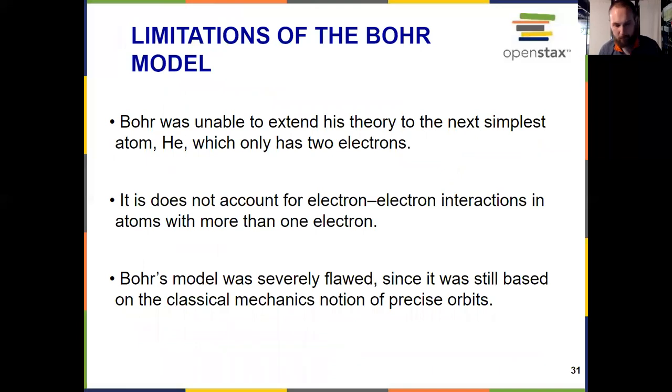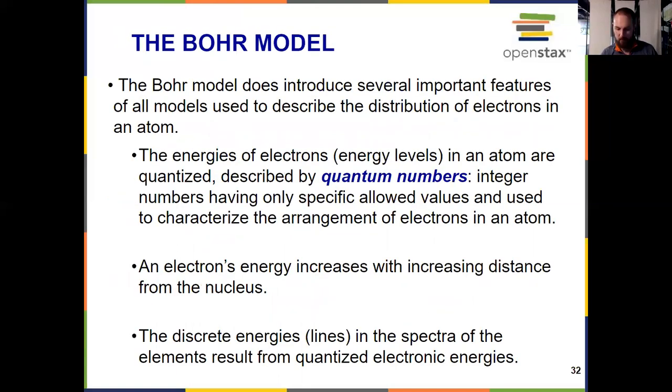To wrap up the Bohr model, it was a giant leap forward in the world of chemistry and physics, but when we tried to go from the simplest atom, hydrogen, to just one more electron and proton, helium, the Bohr model kind of fell apart because what the Bohr model didn't account for is electron-electron interactions as well. If I've got two electrons in there, they can repel or shield one another as well. Your textbook says that the Bohr model was severely flawed because it still tied in some things from classical mechanics, but that being said, Niels Bohr is one of the godfathers of chemistry - super important contributions.